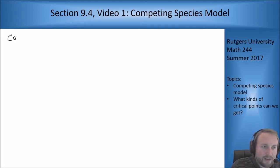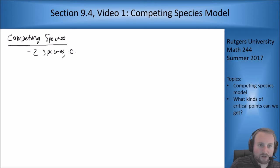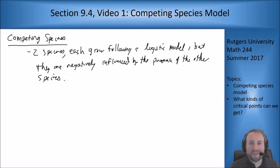This section is about competing species. The idea is that we have two species they each grow following logistic model, or at least they would if they were growing on their own, but they are negatively influenced by the presence of the other species. The main way you can think about this is they are two species that are sharing a food source, so if there's more of one of them there's going to be less food for the other ones to eat and vice versa.